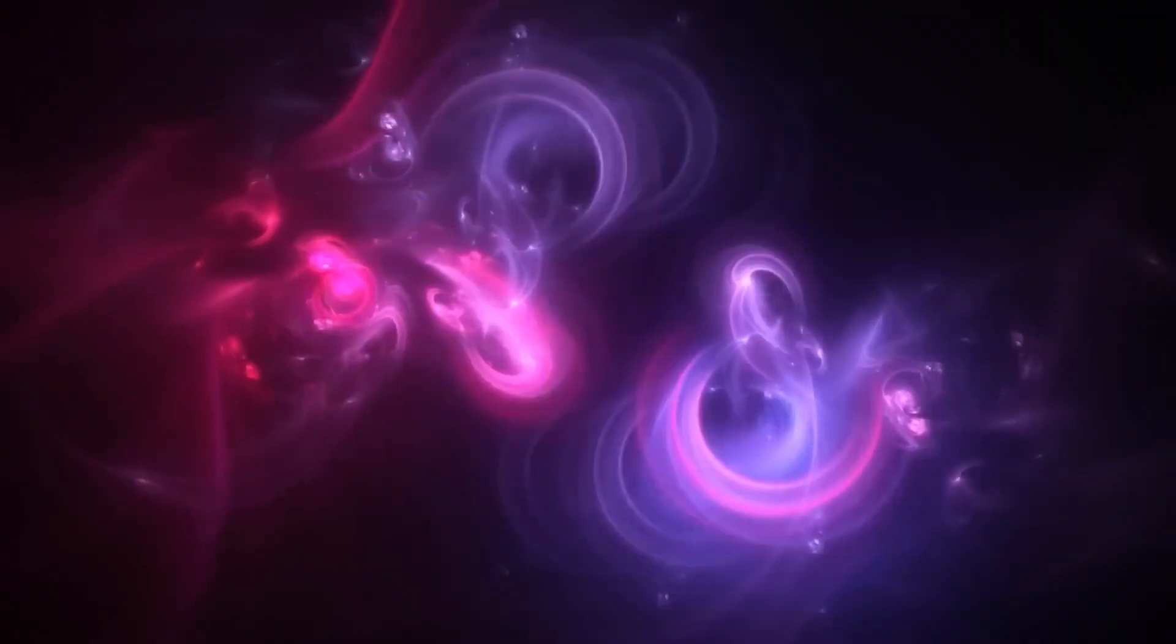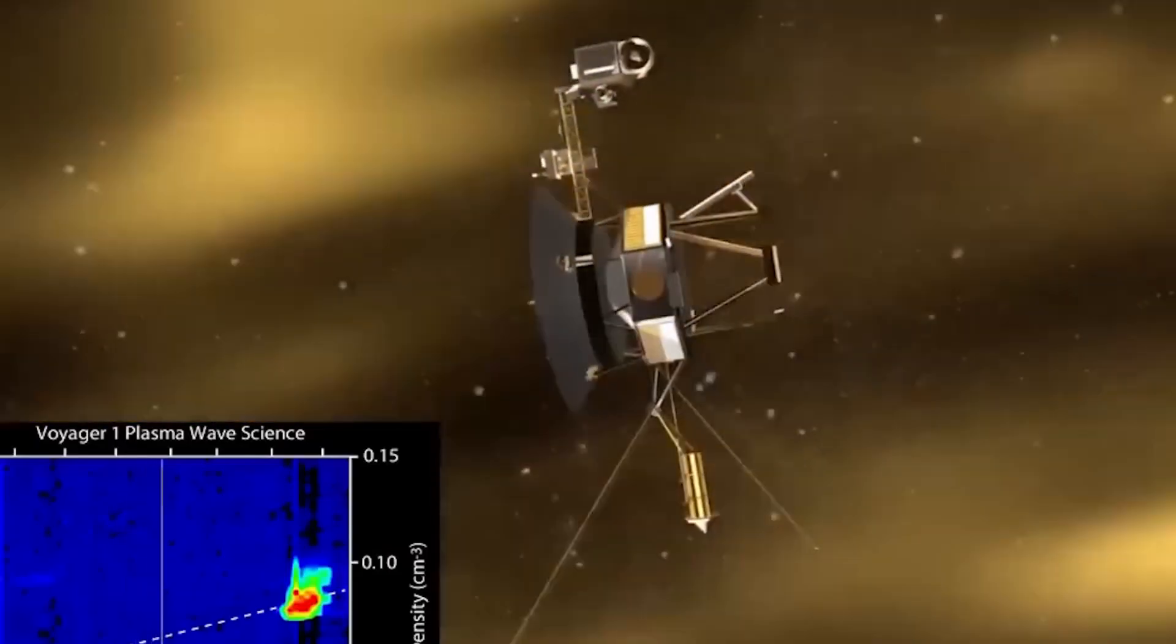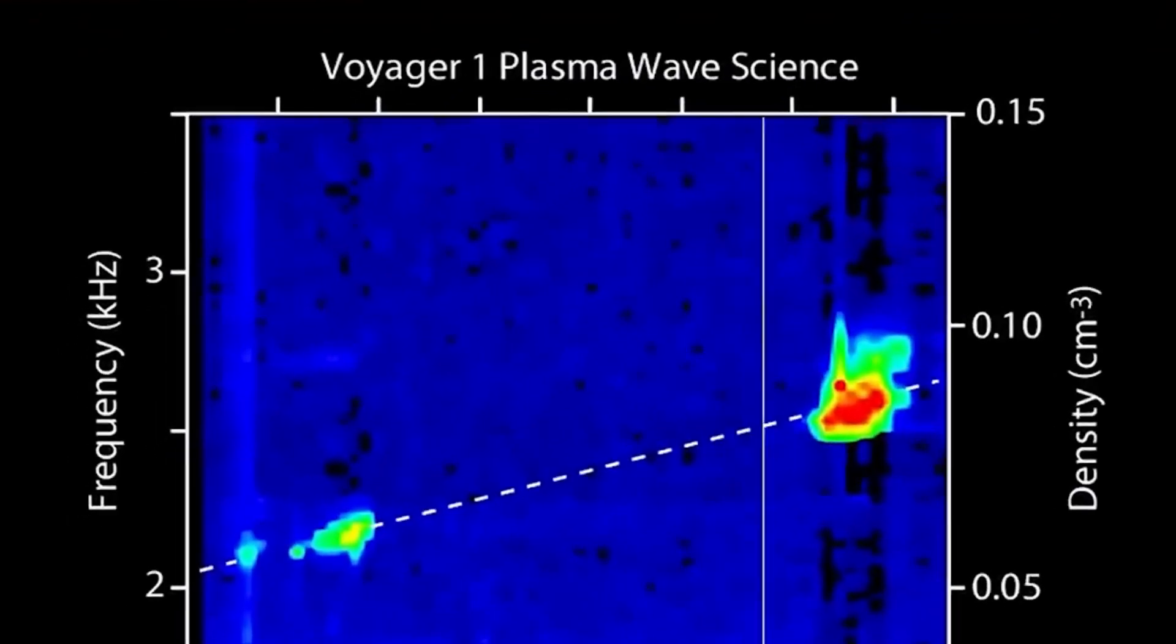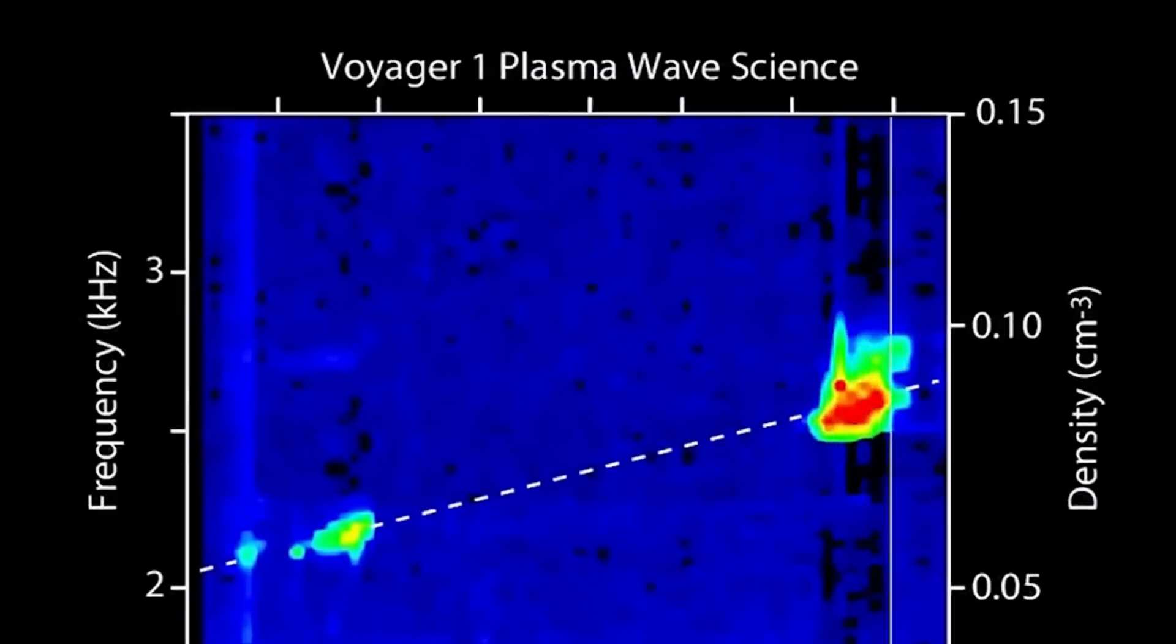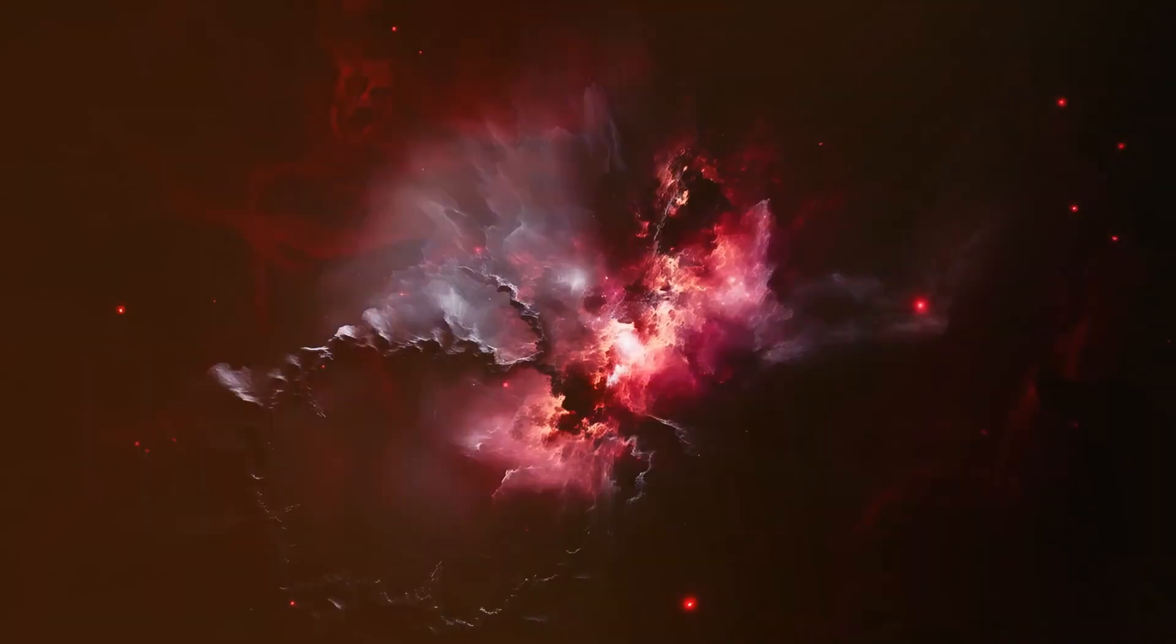In late 2023, it looked like the Voyager mission was over. The signals were garbled. The data unreadable. The spacecraft systems designed in the 1970s seemed to be failing. But NASA engineers didn't give up.